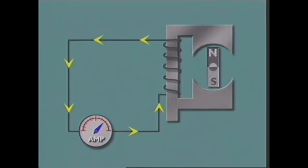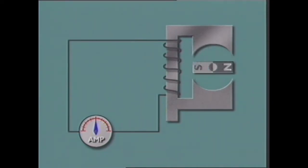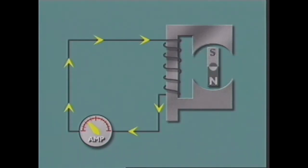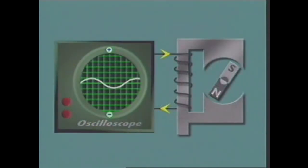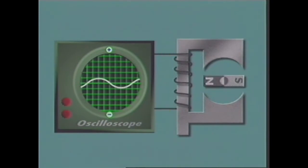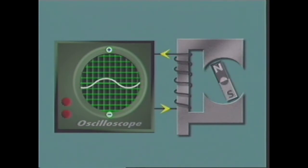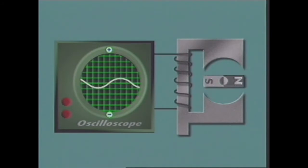When the north pole is up and south is down, voltage is induced in the coil producing current flow in one direction. As the magnet rotates and the position of the poles reverses, the polarity of the voltage reverses too and as a result, so does the direction of current flow. Current that changes direction in this way is called alternating current or AC. The change in direction occurs once for every complete revolution of the magnet.